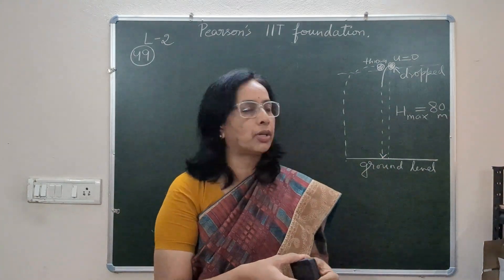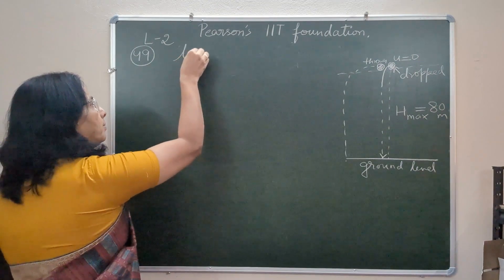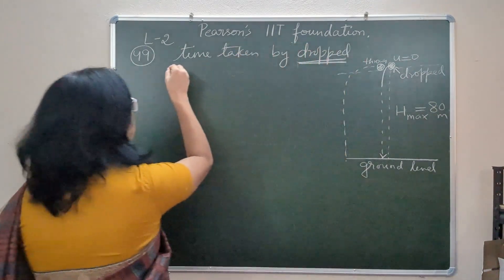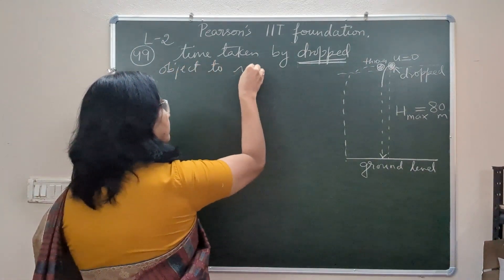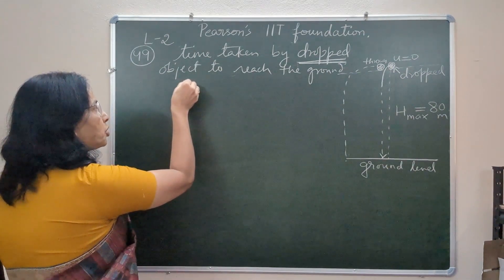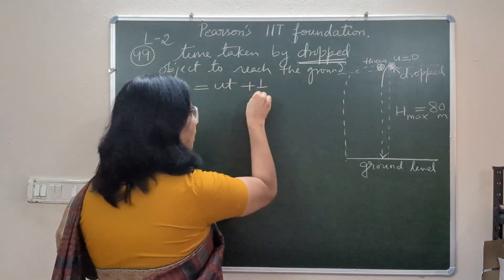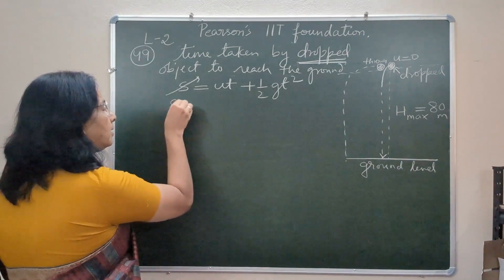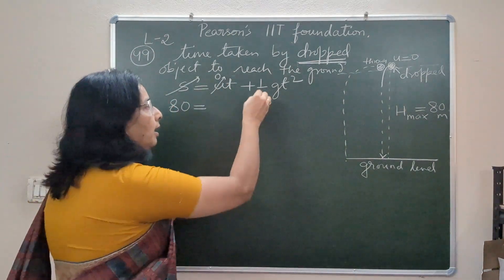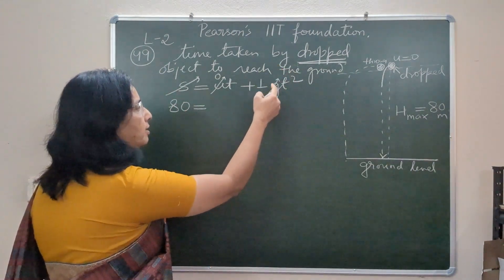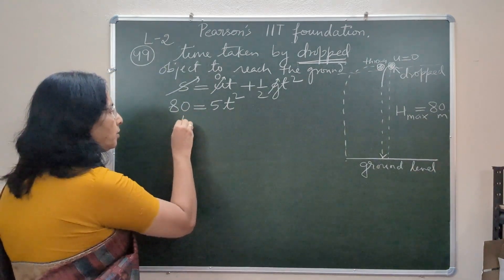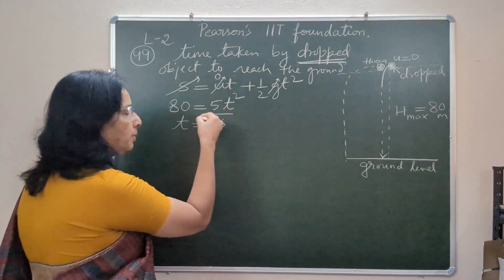We have to find how much time the dropped object and the thrown object will take to reach the ground. Let us start with the dropped object. We will use the second equation of motion: s = ut + ½gt². The distance traveled is 80 meters, initial velocity u is zero because the object is dropped, and g is approximately 10. So 80 = 5t², giving t² = 16, and t = 4 seconds.